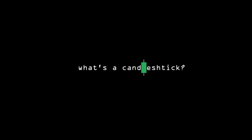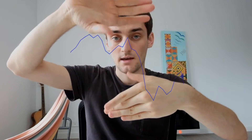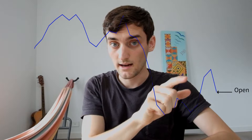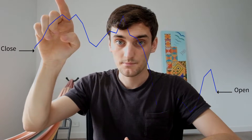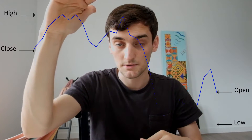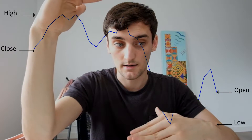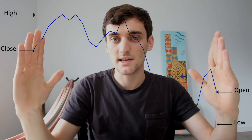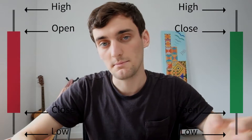First we're gonna have to understand what's a candlestick and then we're gonna have to understand what's a moving average. Imagine the price of a coin going up and down as it does during the day. Now imagine taking a portion of that day, say one hour. You can see that at the beginning of the hour the price was here and at the end of the hour the price was somewhere here. You can also tell that the minimum and the maximum amount reached within that hour are here and here, and so if you take all this information and smash it together you're going to get a candlestick. If the candlestick is green that means that during the hour the price went up, and if it's red it means that the price went down.